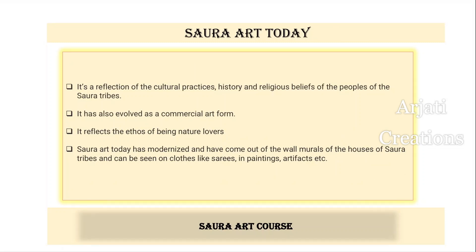Though Sora art is a reflection of cultural practices, history, and religious beliefs, it has evolved as a commercial form of art. This art form still reflects the ethos of being nature lovers, and nature plays a very significant role even in today's Sora art paintings. Today's Sora art has modernized — it has come out from the walls of tribal homes and is now seen on clothes, saris, cushion covers, table clocks, table runners, purses, clutches, lampshades, and other forms of artifacts.